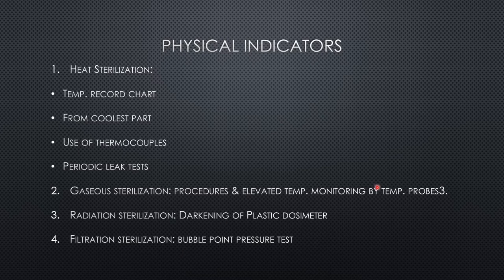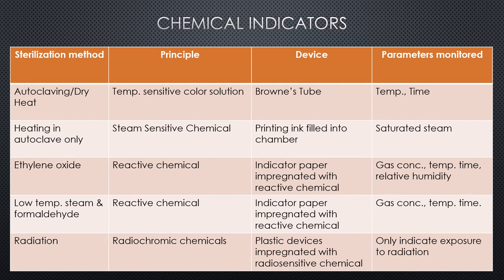Now we will move towards chemical monitoring of the sterilization process. Chemical monitoring is based upon the ability of heat, steam, sterilant gases, and ionizing radiations to alter the physical characteristics of a variety of chemical substances. This change should take place only when the sterilization cycle has been successfully completed, and this change is considered as a sterility check. The ideal indicator response is not always achieved. Chemical indicators generally undergo melting or color change, with the relationship of this change to the sterilization process being influenced by the design of the test device.